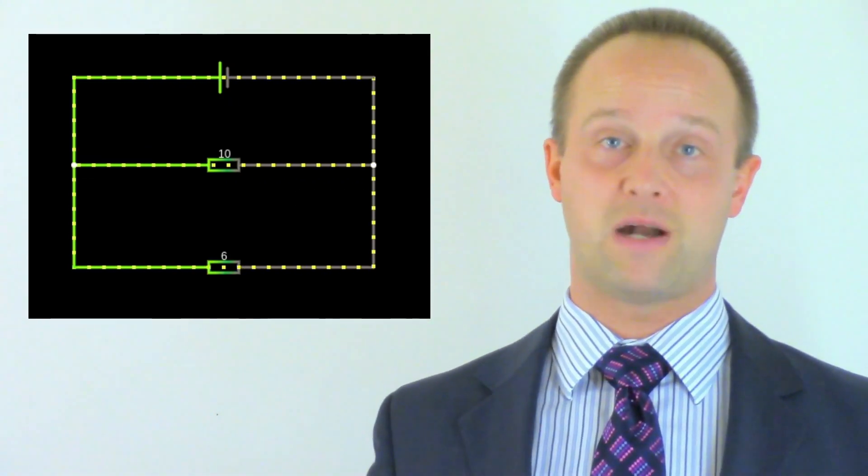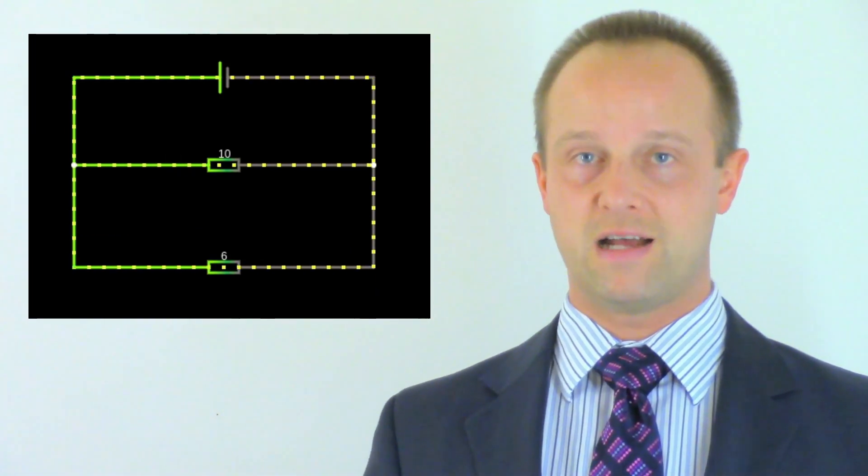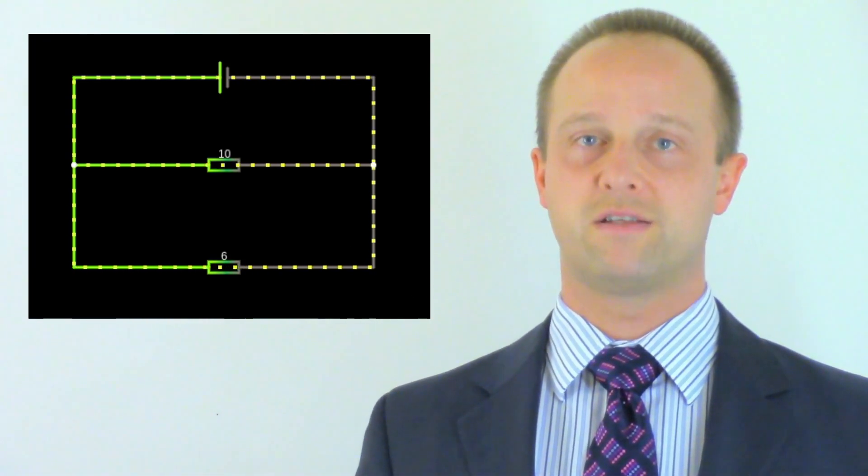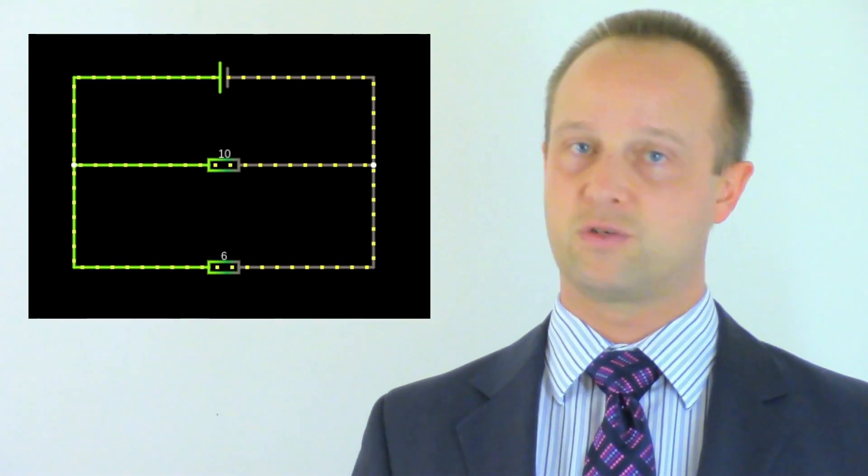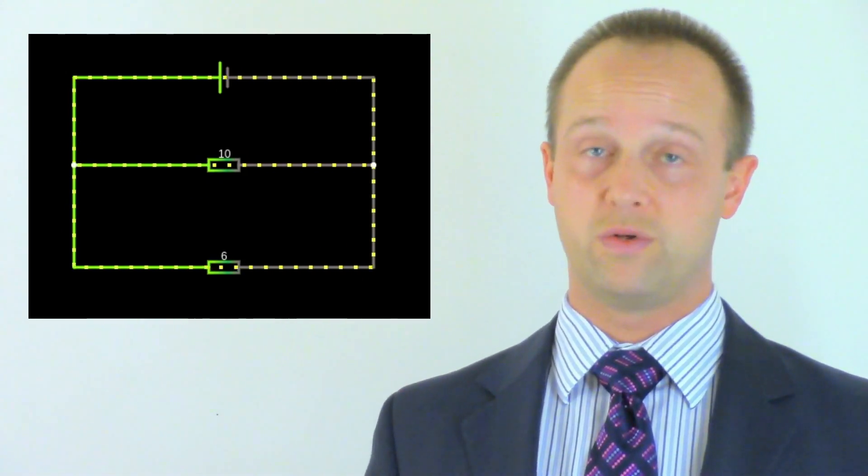Adding any parallel branches, even ones with really high resistances, will always lower the total resistance, because we're just giving the current more routes to flow.